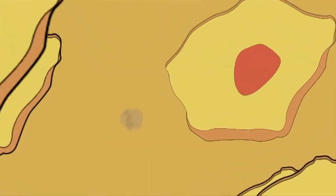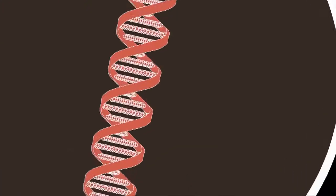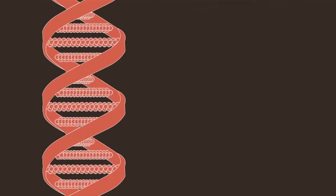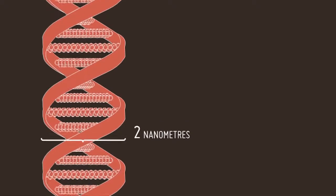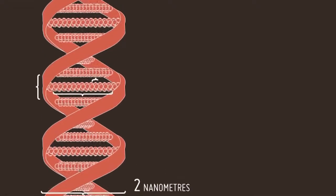We can't see things this small. A bacterium is about 2 micrometers. Smaller still are viruses and phages. And so we go down to DNA, our molecular blueprints. DNA is 2 billionths of a metre in diameter — or more conveniently, 2 nanometres. The units that we use to measure the building blocks of everything. Welcome to the nanoscale.